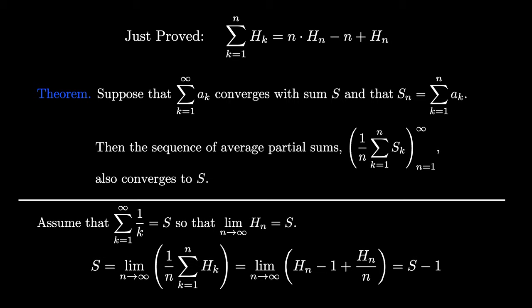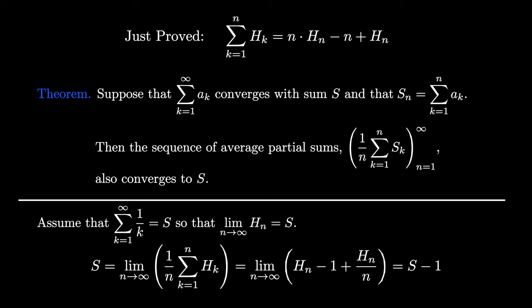Because h sub n approaches S, 1 approaches 1, and n grows without bound. Therefore, we've proved that S equals S minus 1. But this is a contradiction, and that means that our assumption was incorrect, so that in fact the harmonic series diverges.